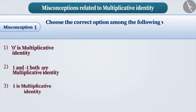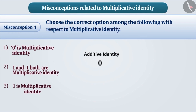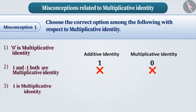Choose the correct option from the following with respect to multiplicative identity. Sometimes, students get confused between the concepts of additive identity and multiplicative identity. Due to this confusion, 0 is considered as multiplicative identity and 1 is considered as additive identity. This is an incorrect understanding. Therefore, option 1 is an incorrect answer.